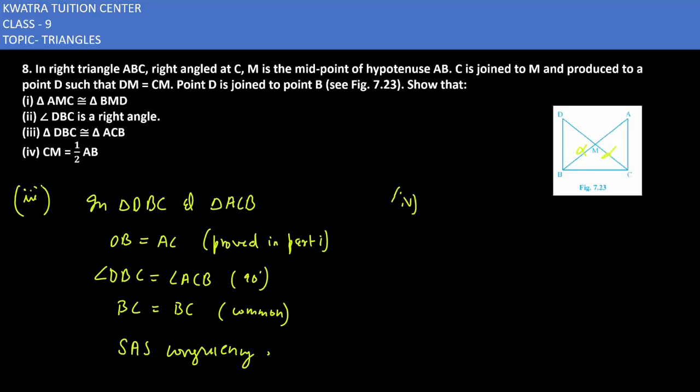Fourth part is very important. Here in fourth part we have to prove that CM is half of AB.